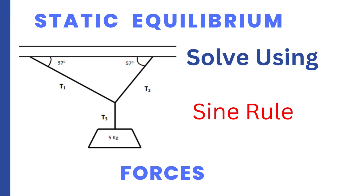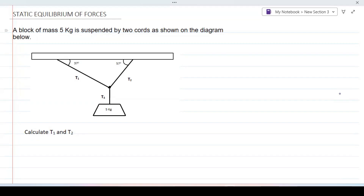Hello everyone. In this video I just want to show you how to solve a static equilibrium of forces using the sine rule. It says a block of mass 5 kg is suspended by two cords as shown on the diagram below. You have to calculate T1 and T2.